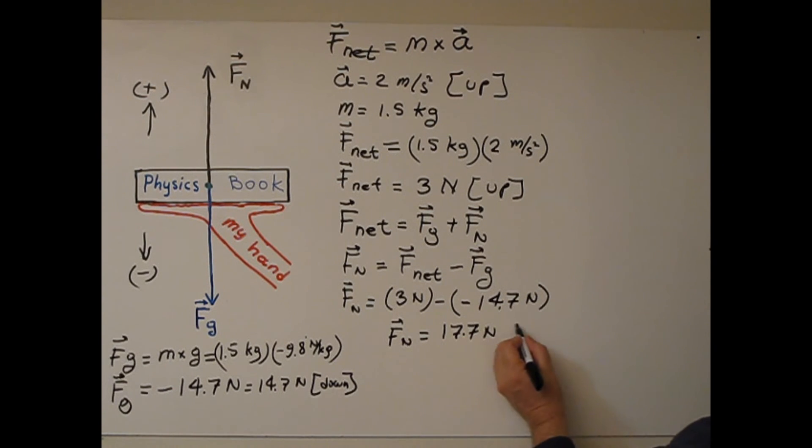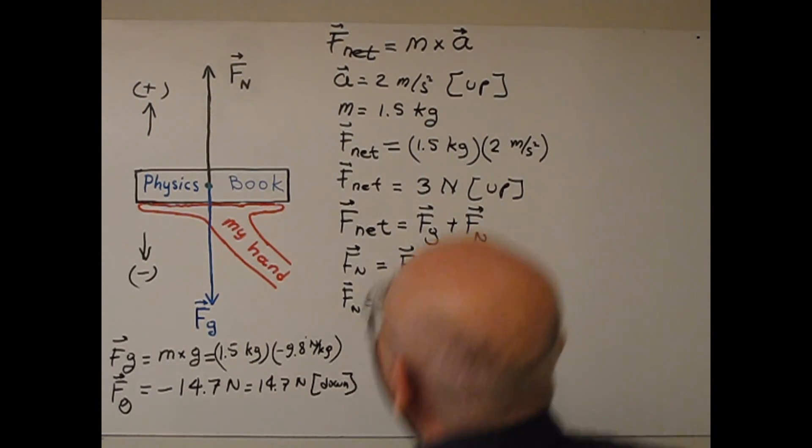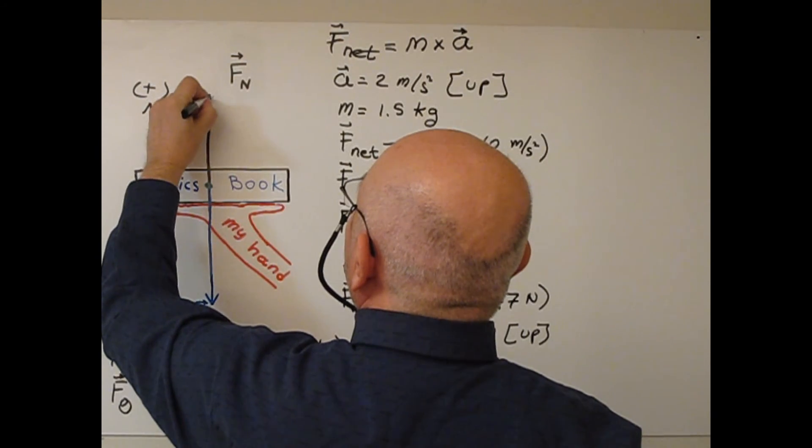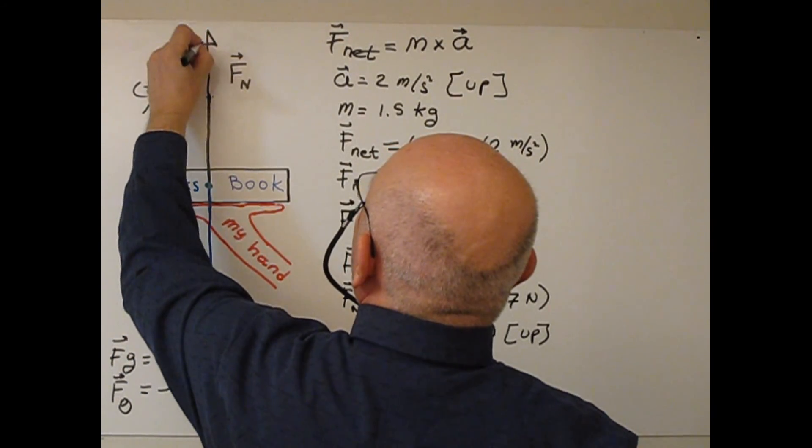So basically, F normal, magnitude of F normal, greater than magnitude of Fg. So I need to make Fn a little bit longer.